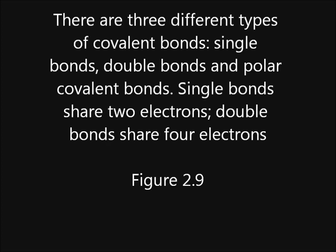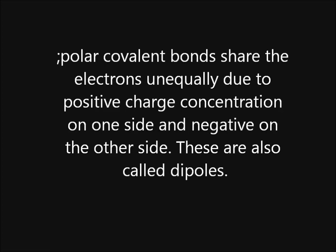There are three different types of covalent bonds: single bonds, double bonds and polar covalent bonds. Single bonds share two electrons; double bonds share four electrons. Polar covalent bonds share electrons unequally due to a positive charge concentration on one side and negative on the other side. These are also called dipoles.